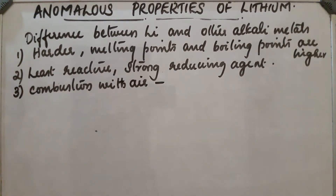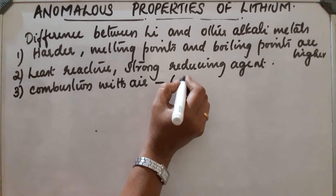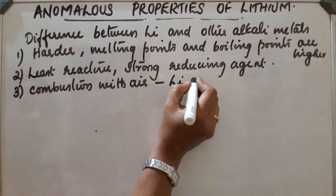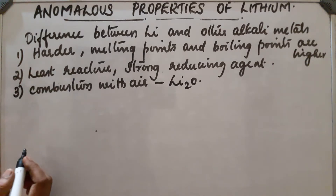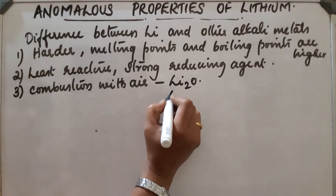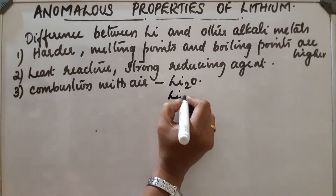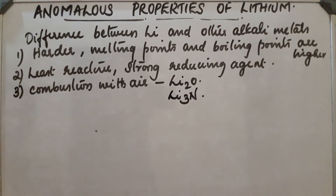On combustion with oxygen, lithium forms lithium monoxide, but other alkali metals form peroxides and superoxides. Lithium on reaction with nitrogen forms lithium nitride, but other alkali metals do not give this reaction.